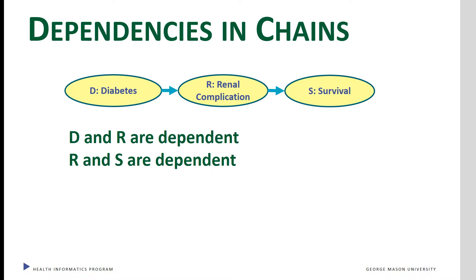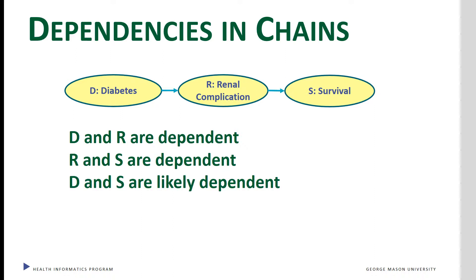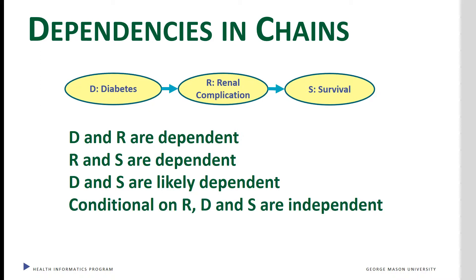This has a series of interdependency within the data. Diabetes and renal complications, as well as renal complications and survival, must be correlated with each other. Diabetes and survival are likely to be correlated, but this correlation is spurious and not causal. Conditional on renal complications, diabetes does not change the probability of survival.